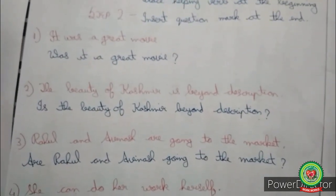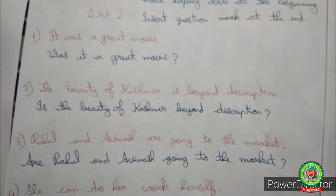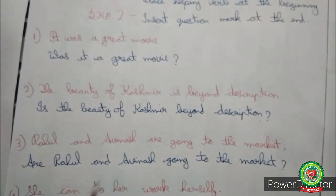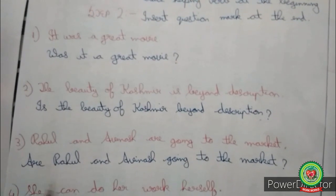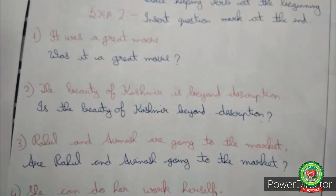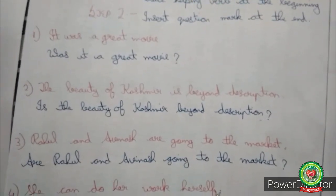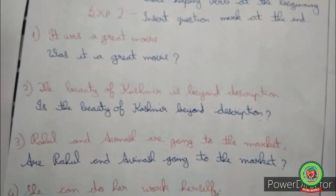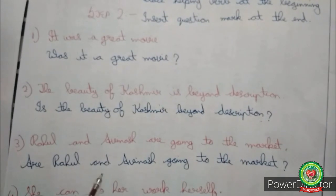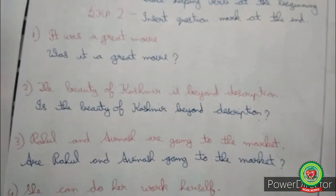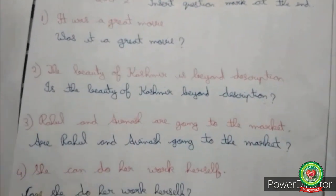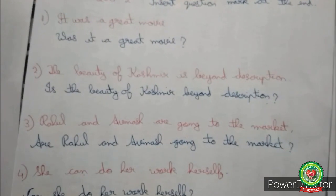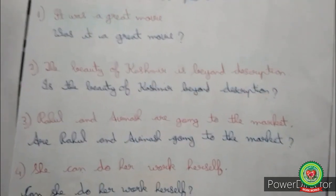Look at one more example: 'She can do her work herself.' Can is the helping verb in this sentence. So we place can at the beginning and insert a question mark at the end: 'Can she do her work herself?'